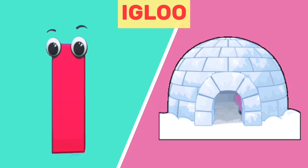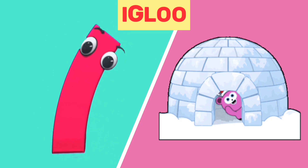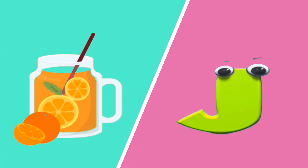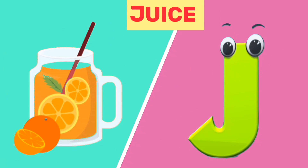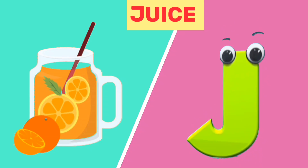I is for igloo. I, i. Igloo. J is for juice. J, j. Juice.